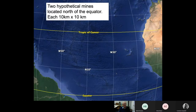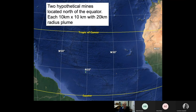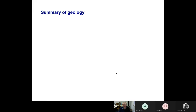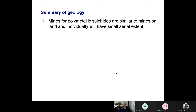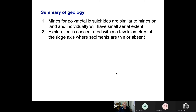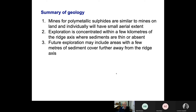On here I show two hypothetical mines — they're just south of the N on this map — and they're 10 kilometers by 10 kilometers, which is probably much larger than mines will ever be. But even if we put a 20-kilometer radius plume around them, you can see that the footprint is still going to be pretty small, especially compared to nodule mining. So to summarize the geology: mines for polymetallic sulfides are going to be very similar to those on land and individually will have small aerial extents. Exploration is concentrated within a few kilometers of the ridge axis where the sediments are thin or absent, simply because they can't look through much thickness of sediment to identify resources.